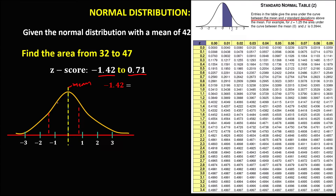For the area from the mean to the Z-score for negative 1.42, just ignore the negative — so we look up 1.42. We go to row 1.4 and column 0.02. Connecting these, the area is 0.4222.